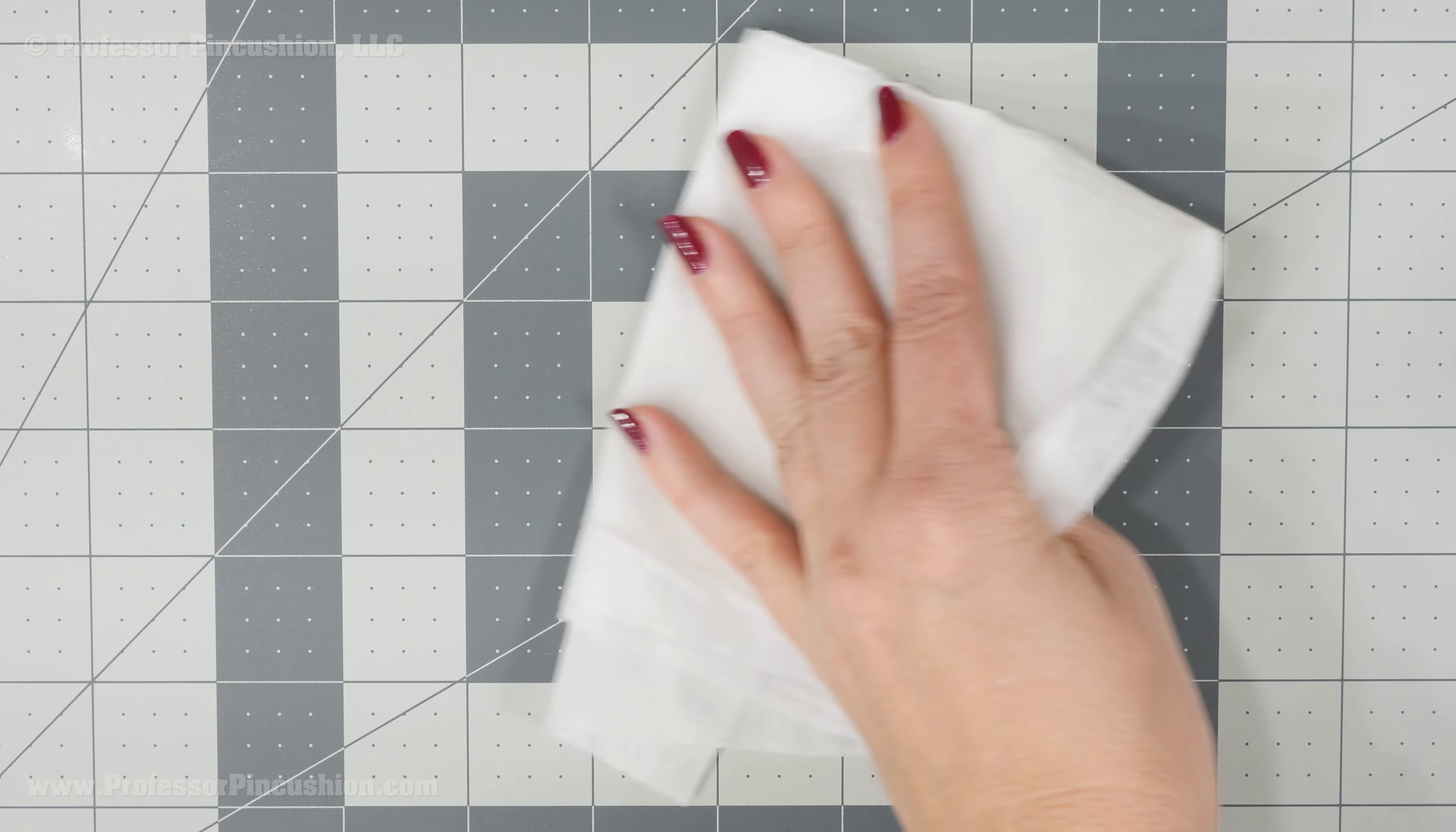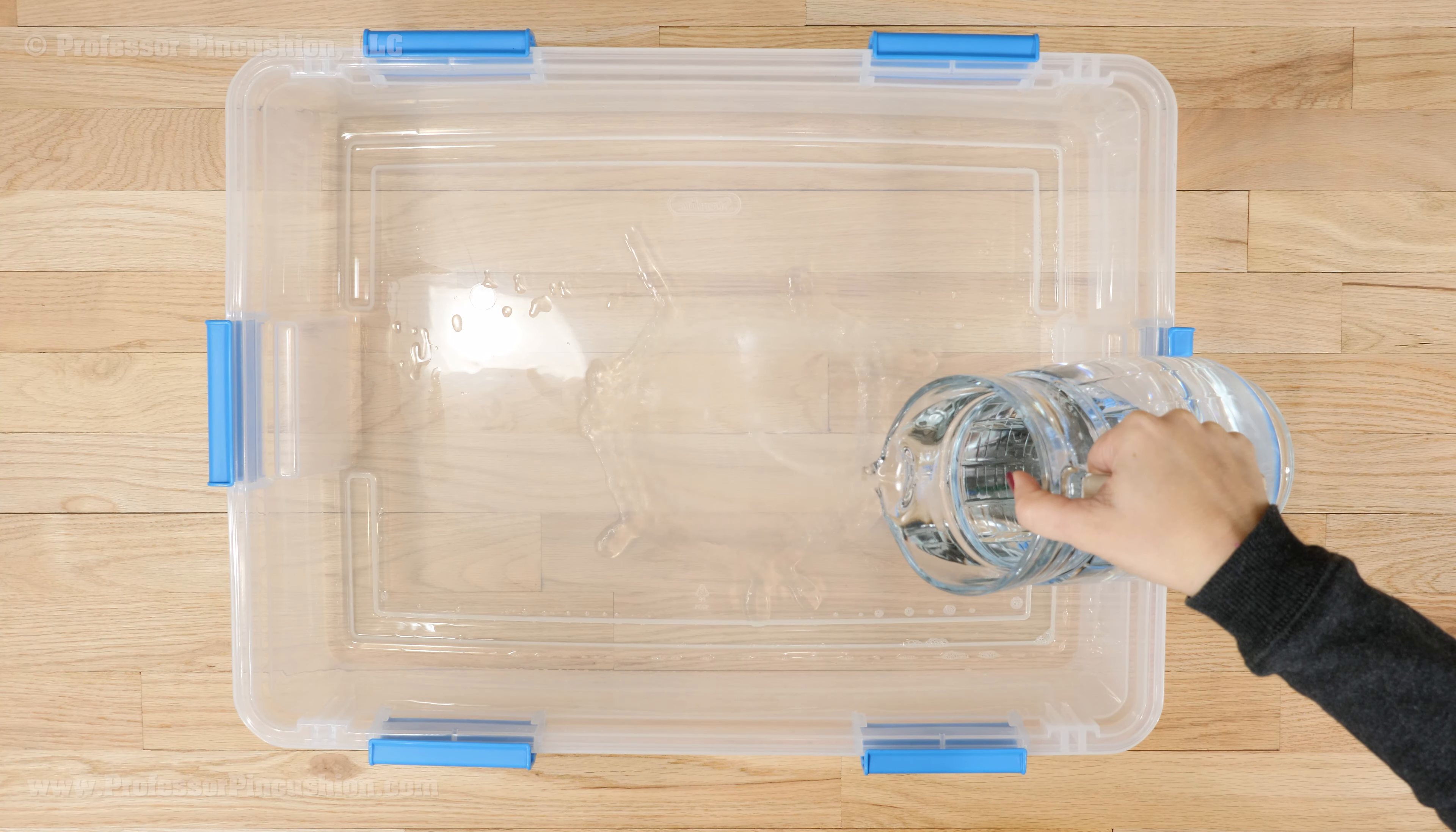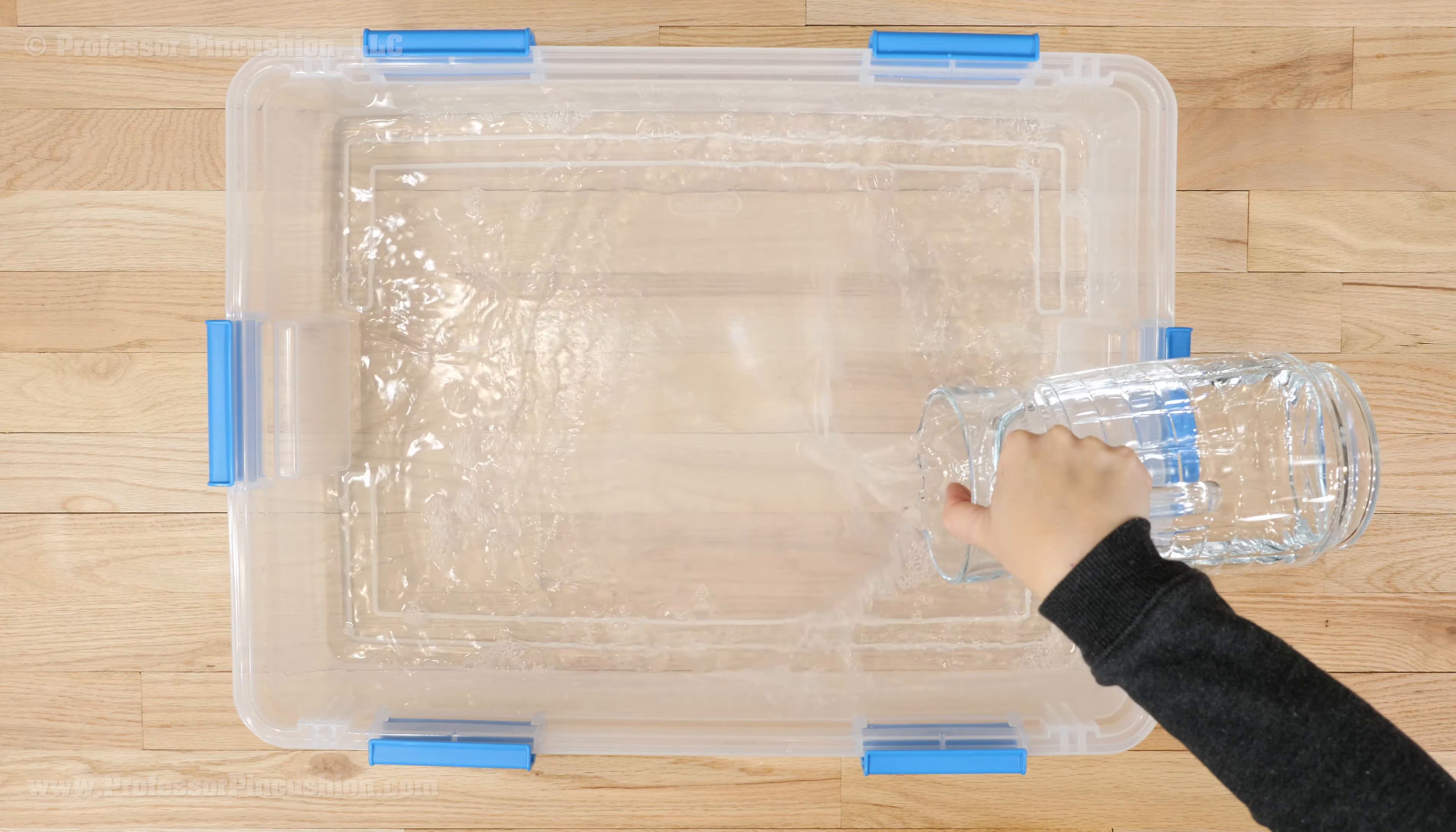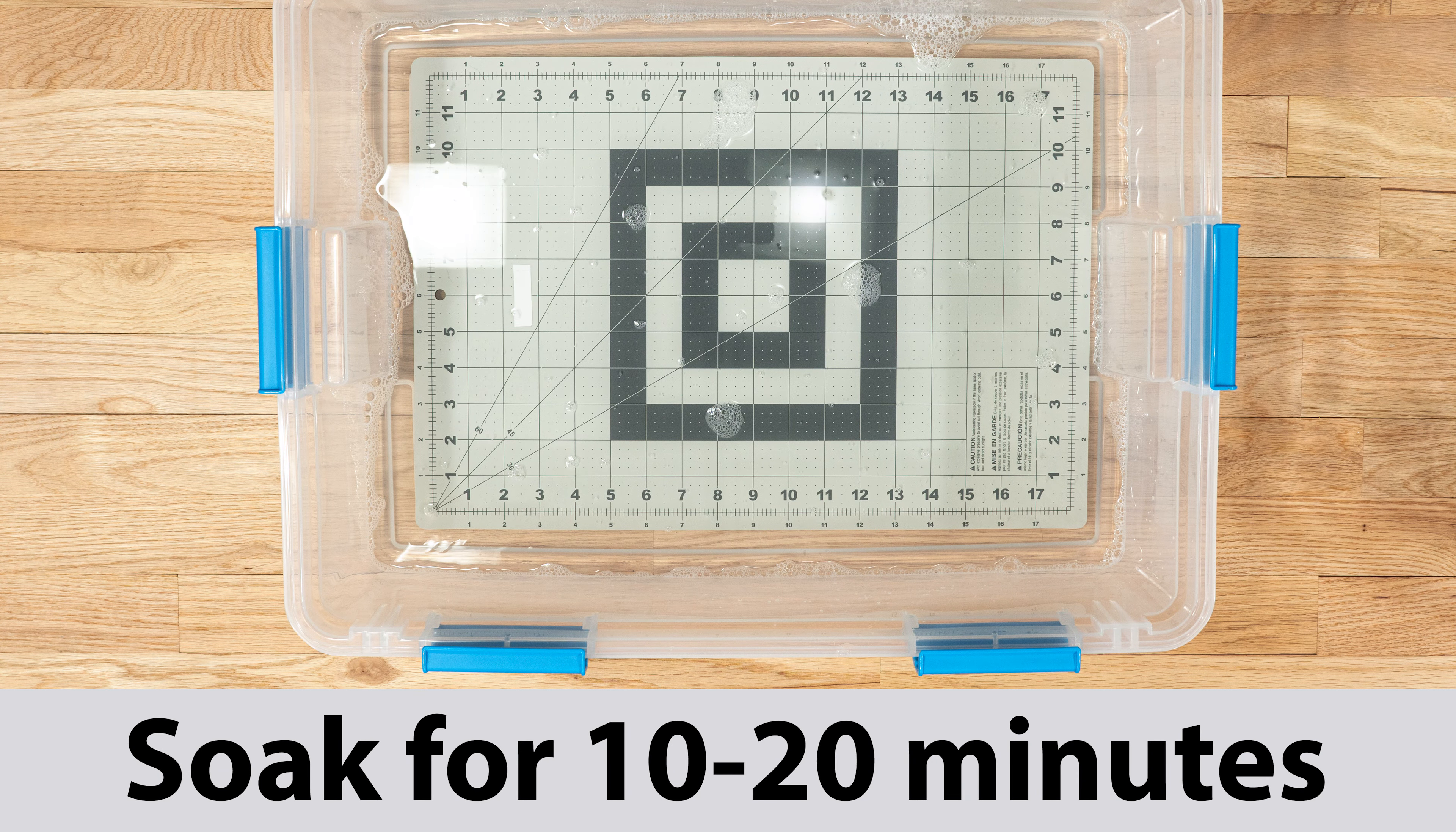To deep clean and condition your mat, you can do the following steps. Wipe your mat down, removing as many fibers as you can. In a plastic tub, sink or your bathtub, depending on how big your mat is, add room temperature water enough to cover your mat. For every gallon of water, add a quarter cup of white vinegar. Let the mat soak for 10 to 20 minutes.